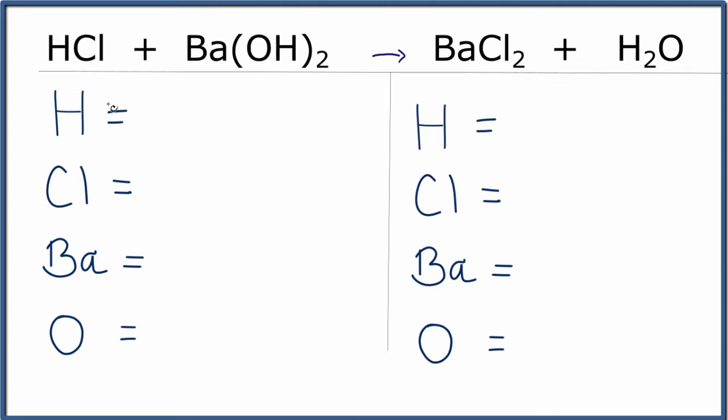So let's start out with the hydrogen. We have one chlorine. We have one barium. We have one. And the oxygen, we have two of these. We have one times the two, so we have two oxygens.